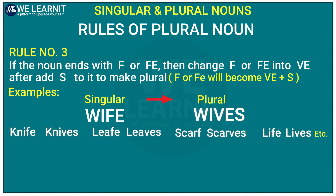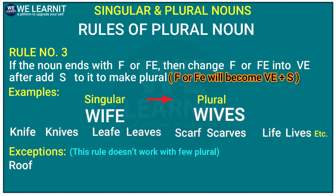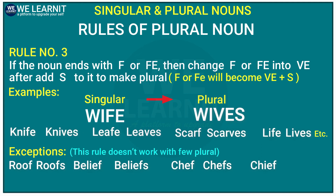But here there are some exceptions — the rule doesn't work with a few plurals. For example, 'roof' ends with -f, so as per the rule, when we make it plural, we would change -f to -ve. But here we cannot do that. So 'roof' simply becomes 'roofs' — we just add -s. Similarly, 'belief' becomes 'beliefs', 'chef' becomes 'chefs', 'chief' becomes 'chiefs', etc.